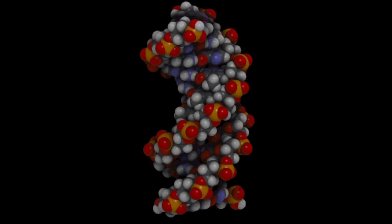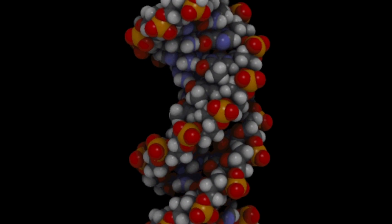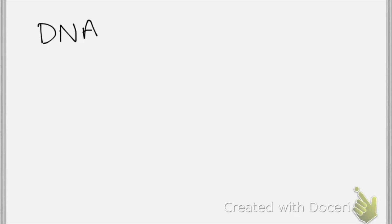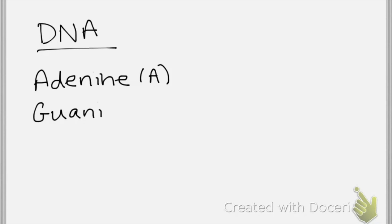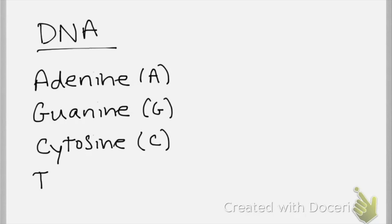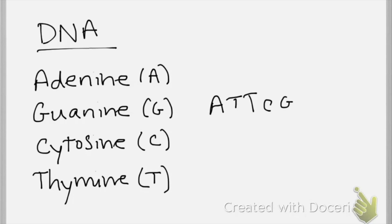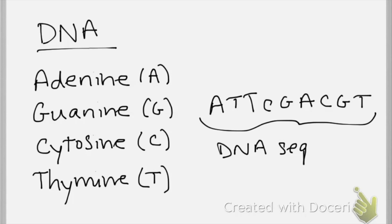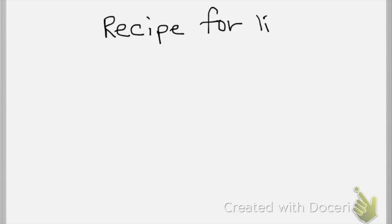Let's zoom into their DNA and see what makes these organisms different from each other. All living things have DNA, which is made of bases called adenine, or A, guanine, or G, cytosine, or C, and thymine, or T. The particular order of these bases is called a DNA sequence. This sequence serves as the recipe for making everything a cell needs to carry out regular processes necessary for life.